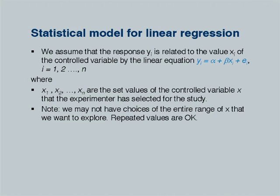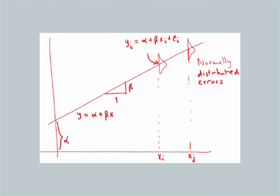What we do is take the criterion of minimizing the sum of squared errors. Given Xi, Yi minus alpha plus beta Xi is the error term; since Ei is assumed to be mean 0, you can remove that. This is the pictorial representation: there is an underlying line alpha plus beta Xi, superimposed on which are some error terms. Alpha is the Y-intercept in this diagram and beta is the slope of this line.